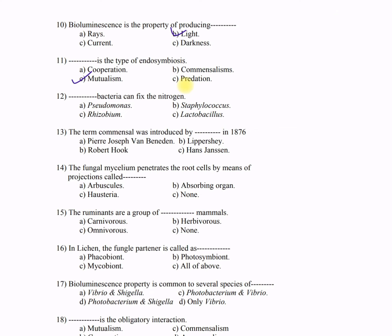Question 12: Dash bacteria can fix nitrogen — A) Pseudomonas, B) Staphylococcus, C) Rhizobium, D) Lactobacillus. The correct answer is C — Rhizobium.